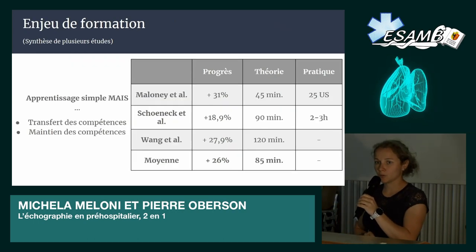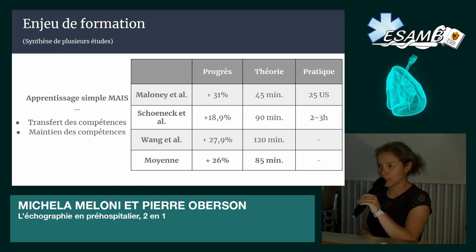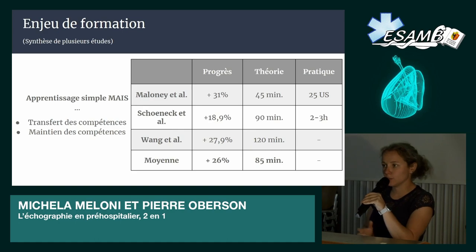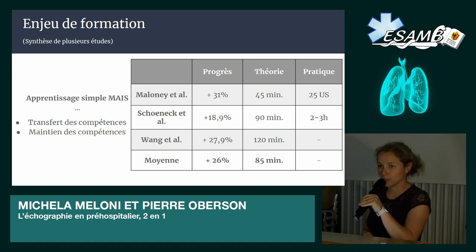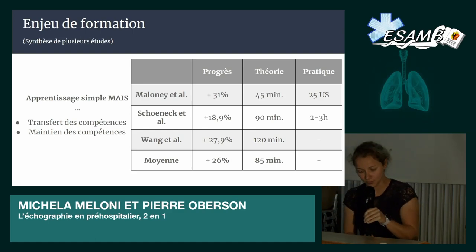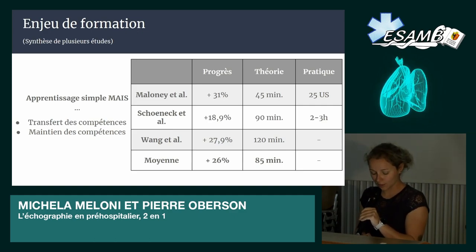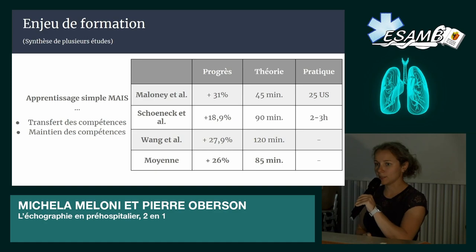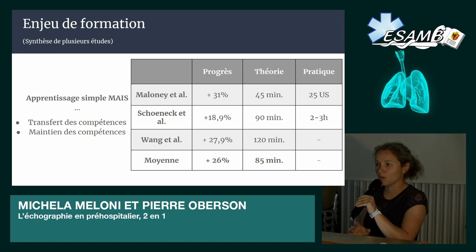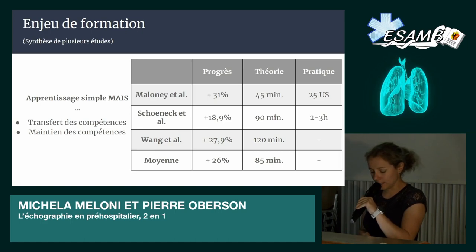C'est important de parler de la formation parce qu'imaginez devoir avoir une échographie dans vos ambulances et devoir s'en servir — ça paraît un enjeu assez compliqué. L'avantage avec l'échographie pulmonaire, c'est que c'est un des types d'échographie les plus simples d'apprentissage comparé au FAST ou à d'autres types. J'ai fait une synthèse de plusieurs études : en moyenne, avec 85 minutes de théorie et quelques heures de pratique, on arrive à augmenter les scores de 26% entre le pré-test et post-formation.